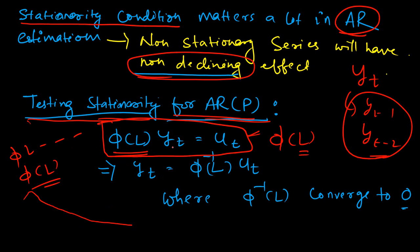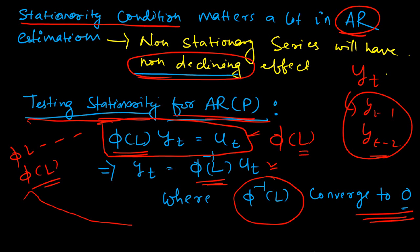Yt can be represented as the inverse of this theta(L) term multiplied by the error term. If this inverse term converges to 0, we are sure that the AR model is stationary. Only then can you proceed with estimation. Without being sure that the series is stationary, you cannot go ahead with estimation, because otherwise the lags will have a non-declining effect — which is not an ideal condition for estimating a time series model.